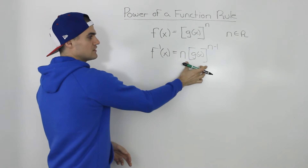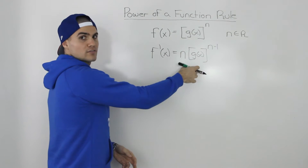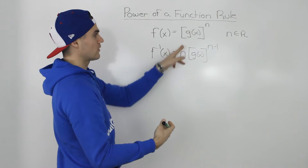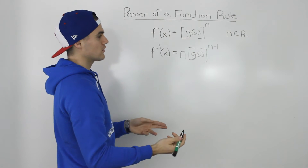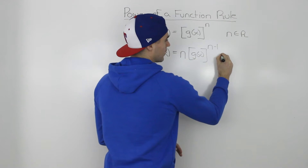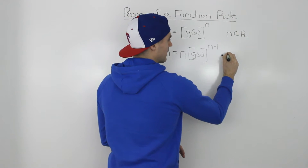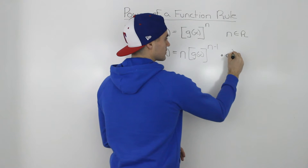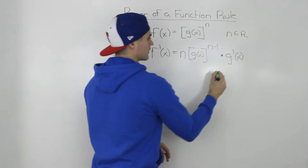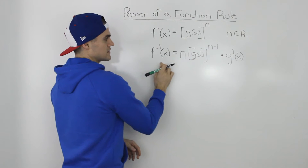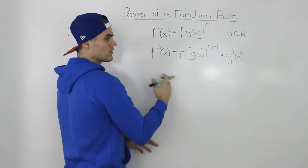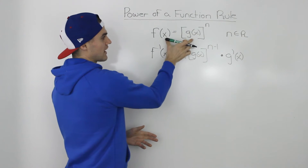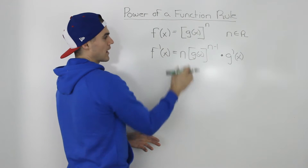But instead of just leaving the derivative like this, like we usually have done with the power rule where this is just a variable, you multiply this by the derivative of that inner function. So this here represents the derivative of a function that is in this format.